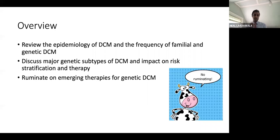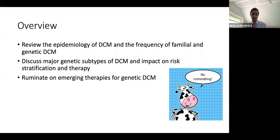Here's an overview for today's presentation. I'll try to put it in context by starting with the epidemiology of dilated cardiomyopathy and the frequency of familial and genetic disease therein. The majority of the talk will follow a structure of discussing the major genetic subtypes and how knowledge of that should impact clinical management today. Within that, I'll embed some ruminations on emerging therapies that work towards the goal of precision medicine.